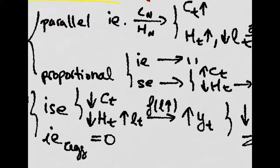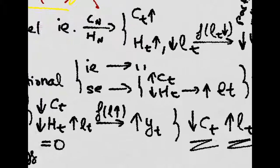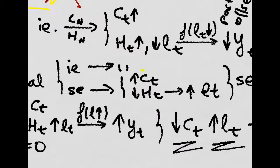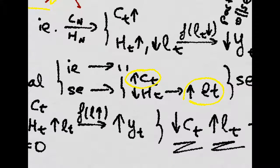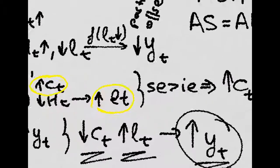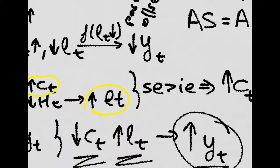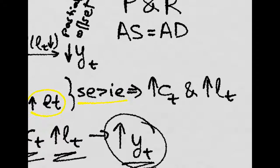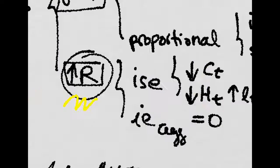If we have a proportional shock, then the income effect is basically the same, but in the substitution effect we have an increase in consumption and an increase in labor because you are more productive. And if we assume — and empirically this is correct — that the substitution effect is stronger, then we will have an increase in both consumption and labor.